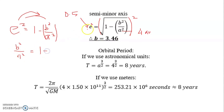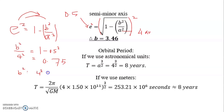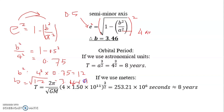We solve: b² = 4² × (1 − 0.5²) = 16 × 0.75 = 12. So b = √12, which equals 3.46 AU. That is the semi-minor axis.